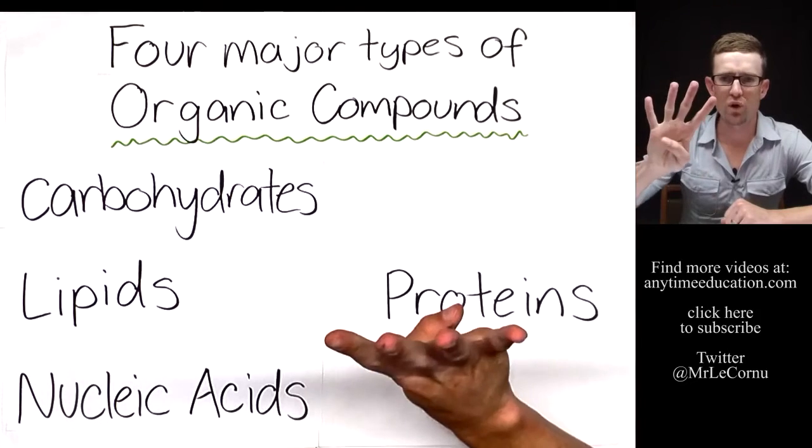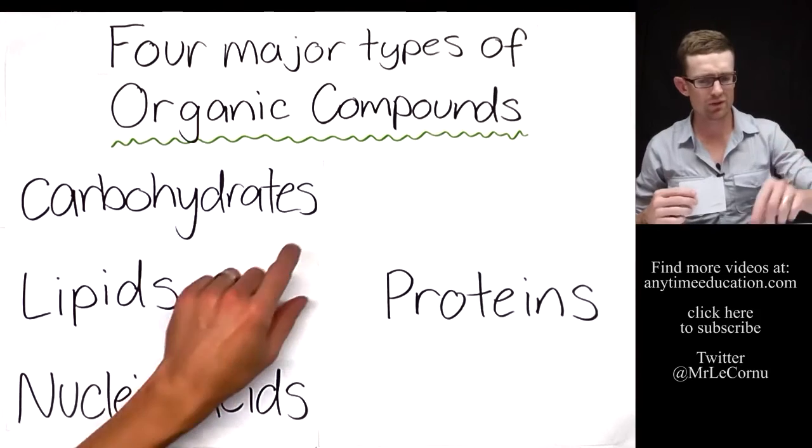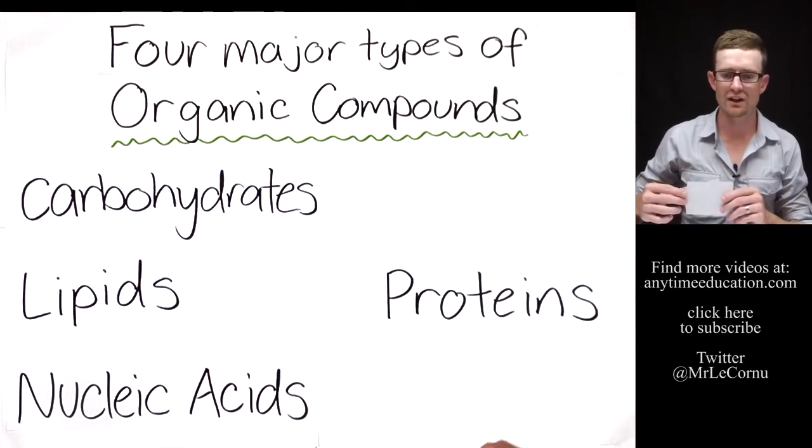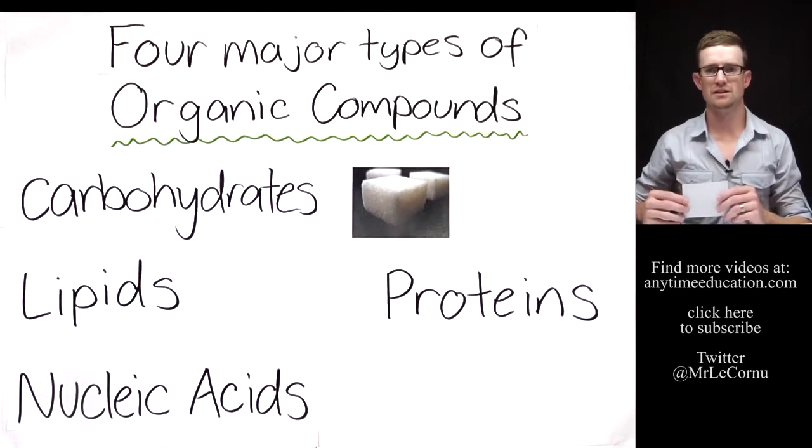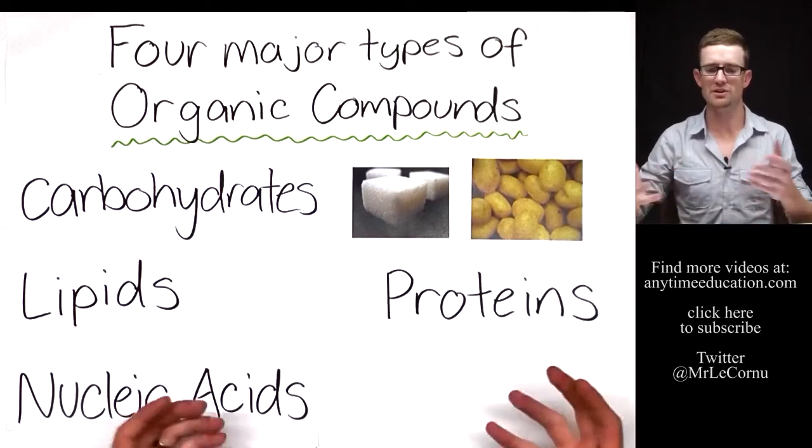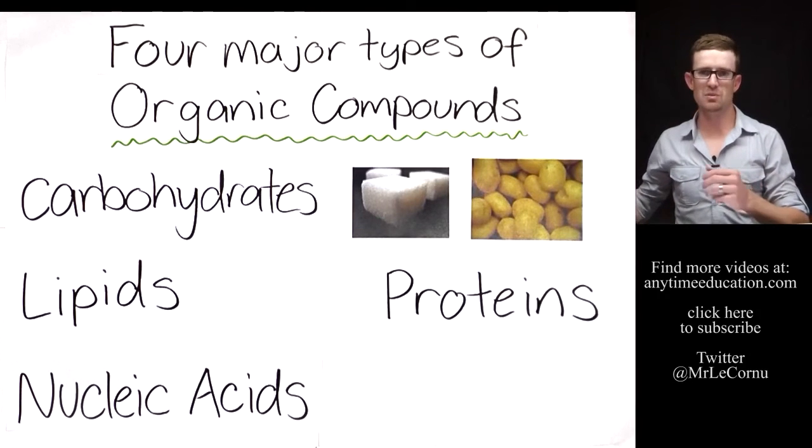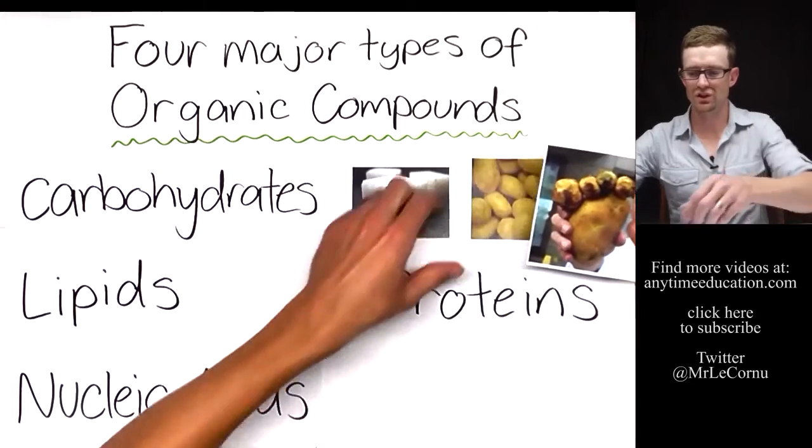There are four major types of organic compounds that play really important roles inside the cells of living things. One of those four major types are carbohydrates. Sugars are carbohydrates. Starches are carbohydrates. I'm showing potatoes there because potatoes are really starchy. I thought it might help you remember that starches are carbohydrates.